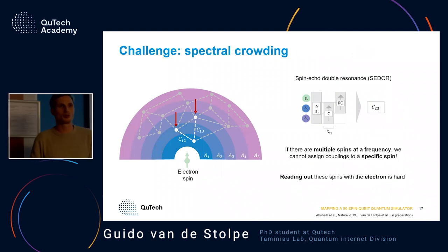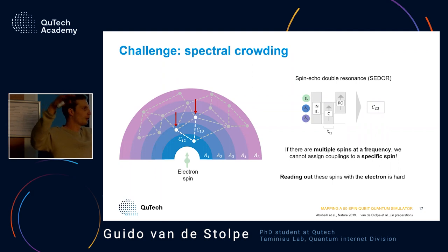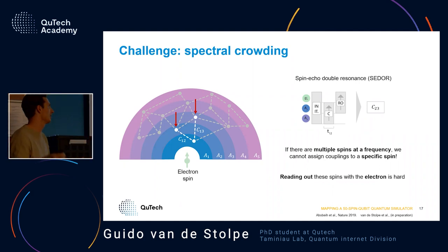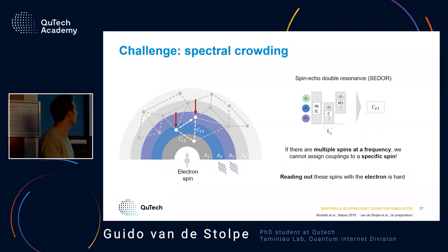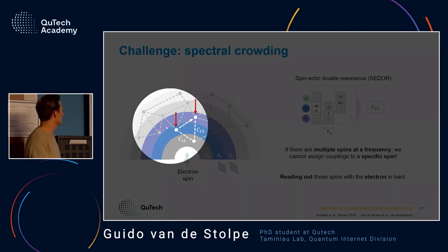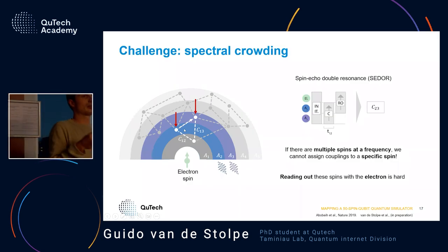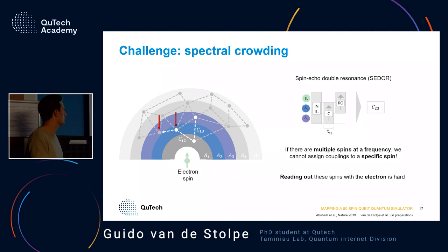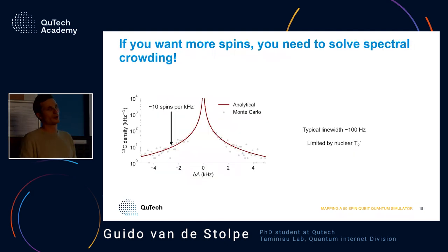The problem with going past 25 spins is that spins farther away from the electron spin all feel more or less the same shift from the electron, so they will have the same frequency and start to overlap in frequency space. If I do a SEDOR between frequencies A2 and A3, there are actually two spins at A3, and when I measure a coupling I never know if it was to one spin or the other. I cannot solve the network if I don't know between which spins I'm measuring something.